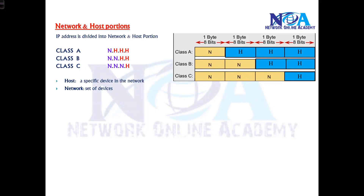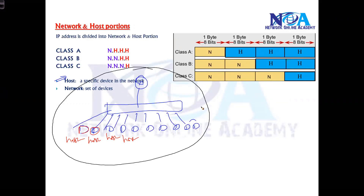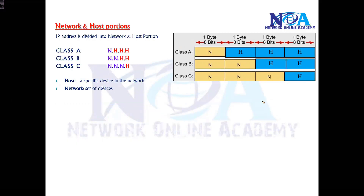Now the question is: what exactly are network and host? The host represents one single device in the network. For example, in a network where you have a set of computers connected through a switch and a router, each individual device is identified as a host. Whereas a network represents the set of devices — that group of devices is called a network. So individual devices are referred to as hosts.